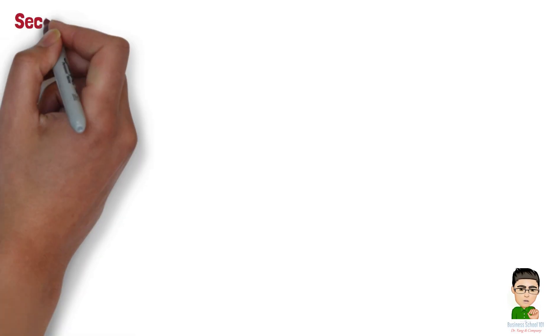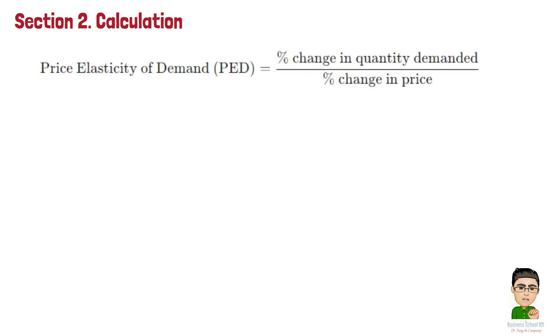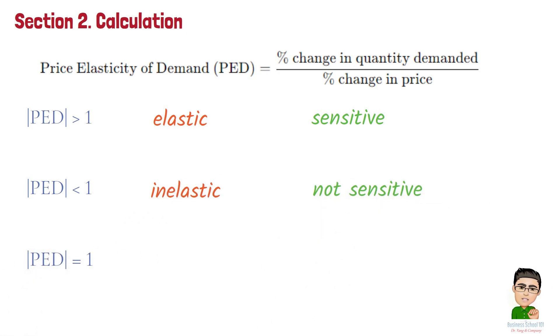Section 2: Calculation. The price elasticity of demand, PED, is calculated using the following formula. If the absolute value of the result is greater than 1, demand is elastic, meaning it is sensitive to price changes. If the absolute value is less than 1, demand is inelastic, meaning it is not very sensitive to price changes. If it equals 1, demand is unitary elastic, meaning the percentage change in quantity demanded is equal to the percentage change in price.